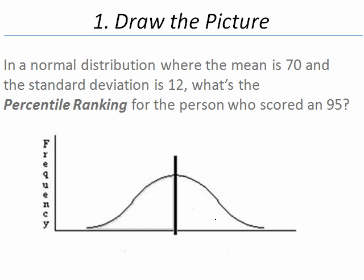In this problem, we are given a couple pieces of information. One of them is the mean, which we will go ahead and record on this image. The other is the value, 95. We have our mean of 70 and our value of 95.